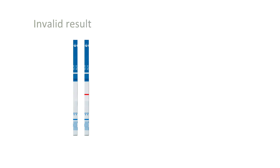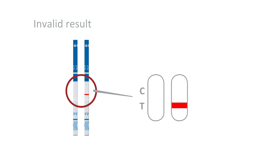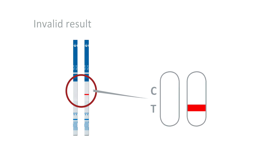If no line appears, or only the test line, the result is invalid. Repeat the test with a new test strip as soon as possible. Don't wait longer than two hours, as you could miss the hormone surge.